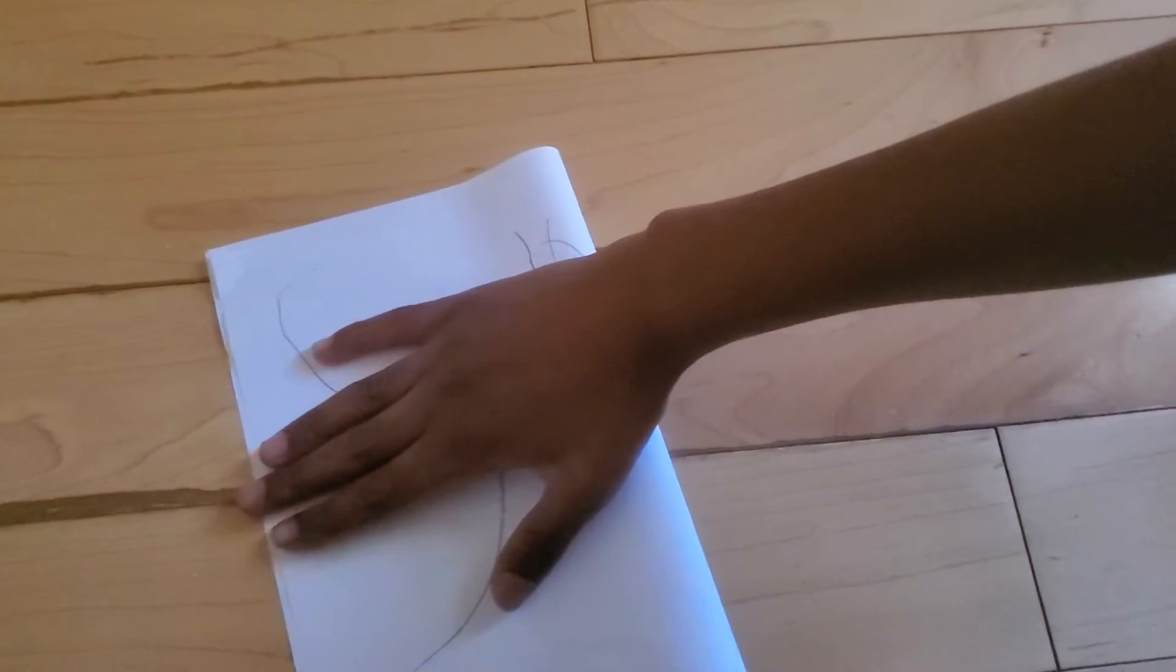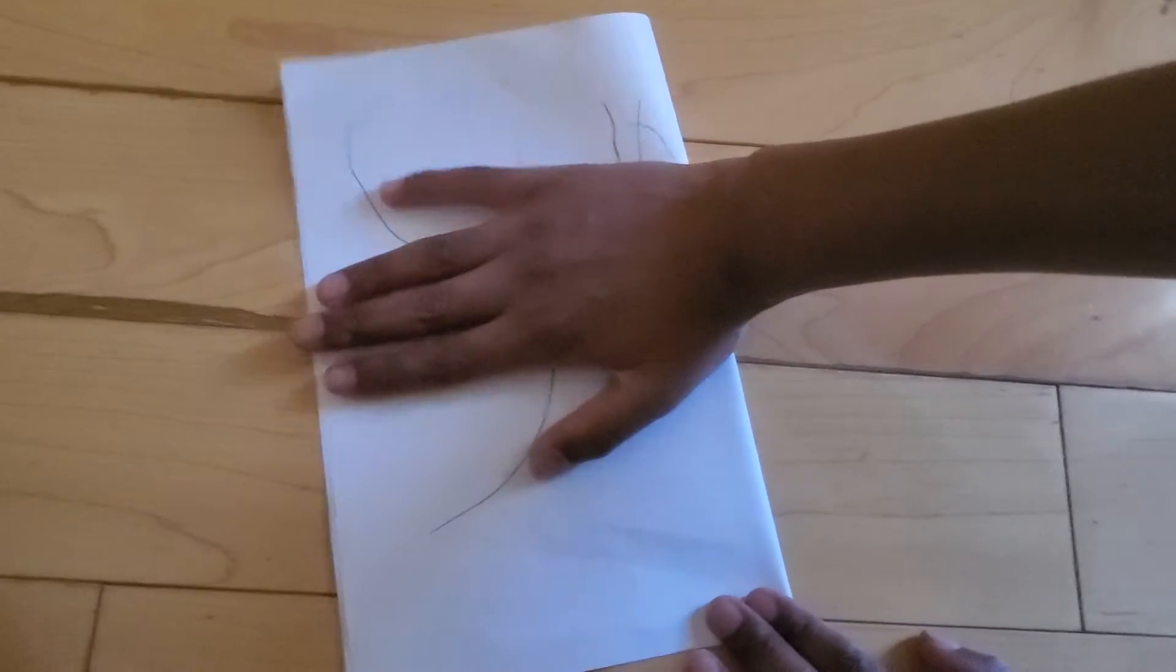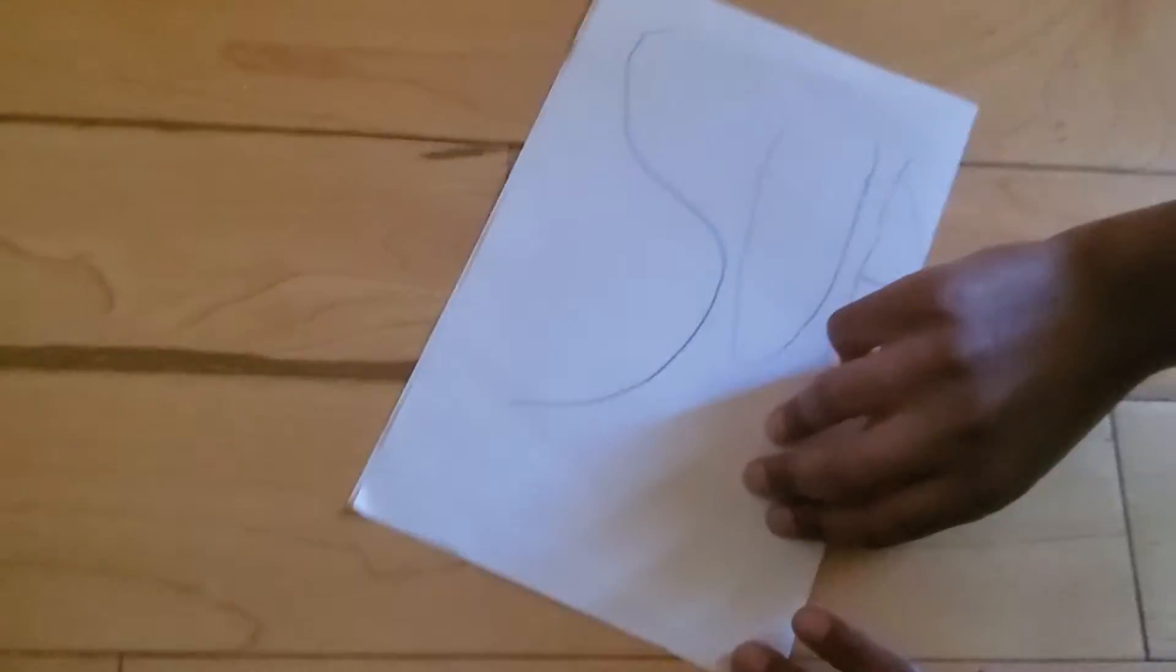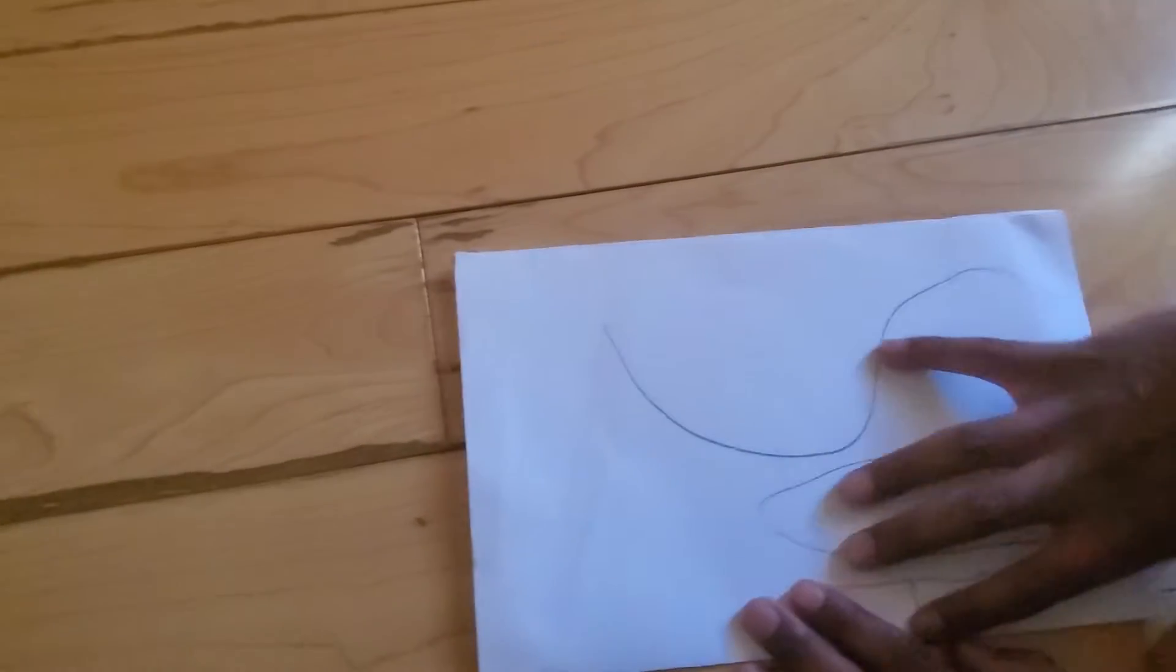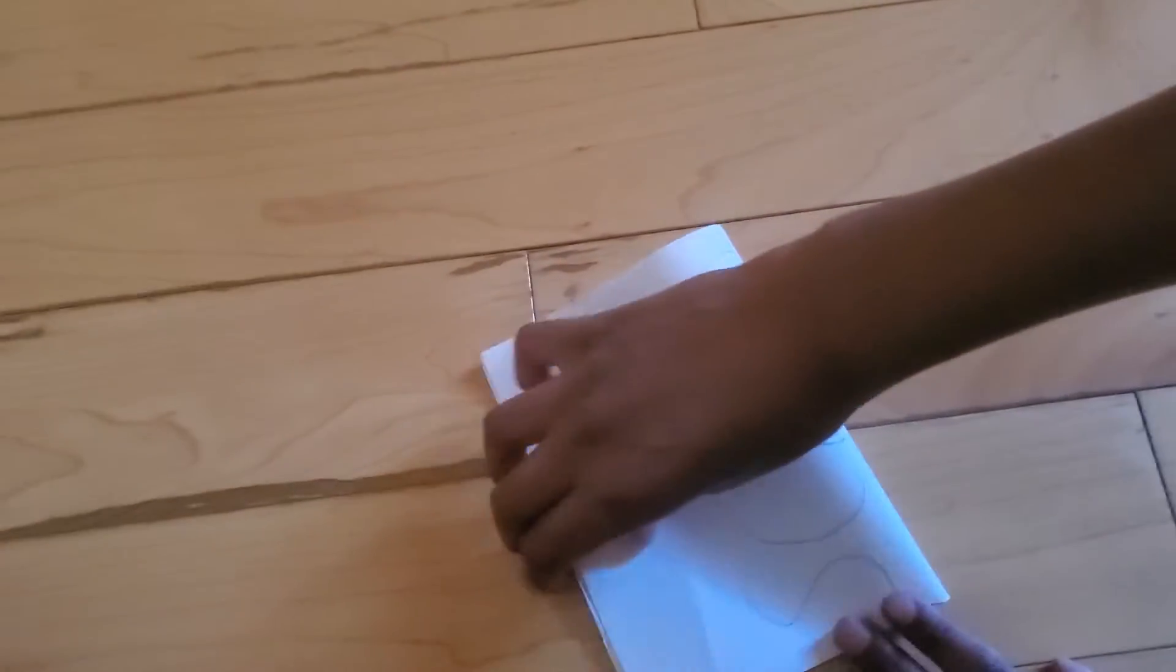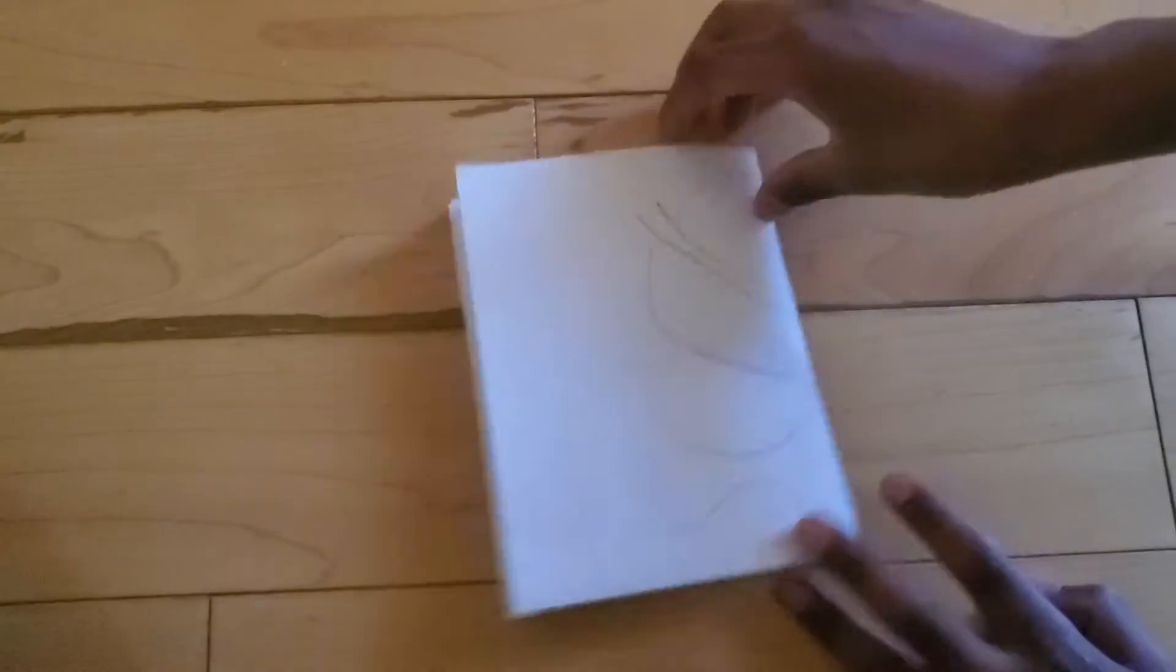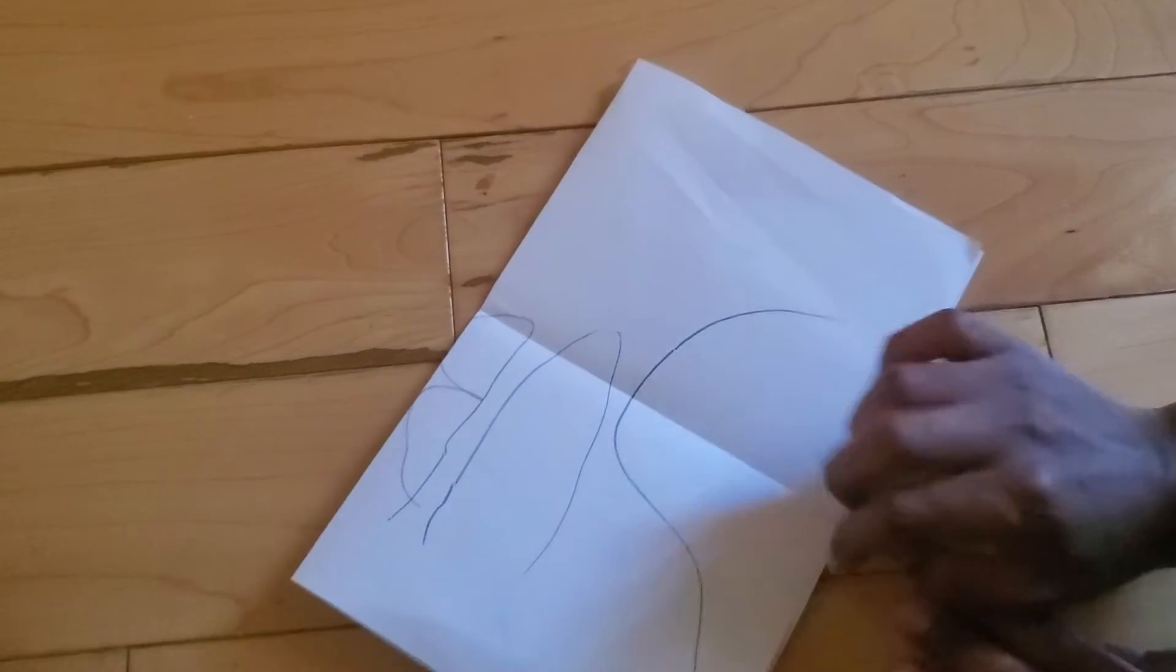So the first step is you do a fold like this. And then you do another fold like that. And then you undo the last fold. And there's a line down the middle.